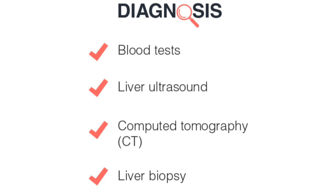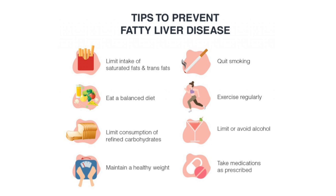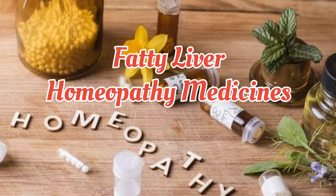Diagnosis of fatty liver disease involves blood tests, a physical examination, imaging studies, and a medical and family history. Blood tests are used to check liver enzyme levels, with elevated enzymes signaling inflammation in the liver. Imaging studies such as CT scan, ultrasound, or MRI may be used to check the condition of the liver. A liver biopsy can also be used to find the extent of liver damage.